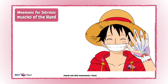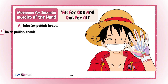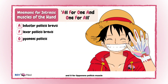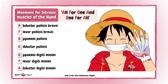Check out this mnemonic for the intrinsic muscles of the hand: All for one and one for all. A is for abductor pollicis brevis. F for flexor pollicis brevis. And O for opponens digiti minimi. F for the flexor digiti minimi. And A for the abductor digiti minimi. These will make sense when we go over these again in labeling.